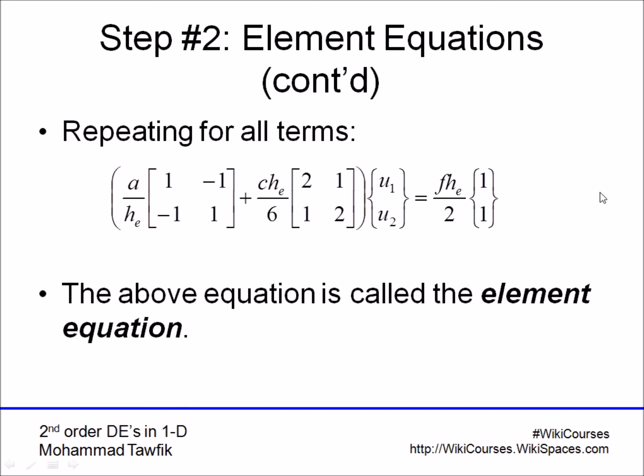Now, what we got is that we transformed the differential equation into a system of linear equations. Supposedly, this system of equations can be solved directly since we have all constants here in these matrices multiplied by the unknown values of u1 and u2, and the excitation terms also presented in a vector form. This is what we call the element equation.